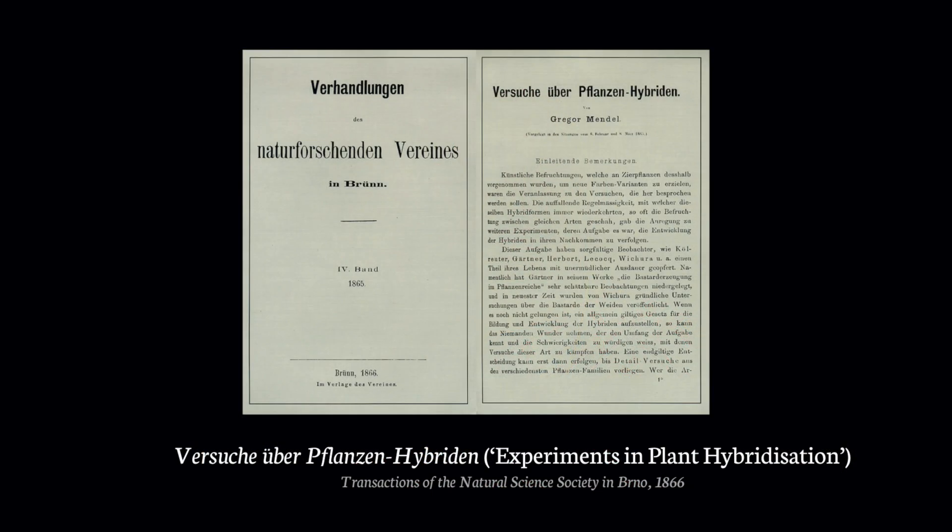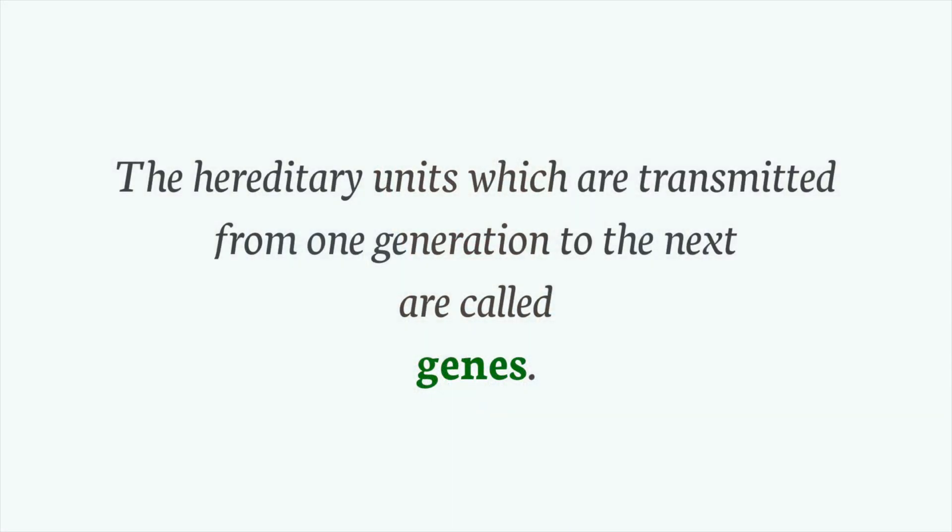Mendel was not the first to perform these experiments, but he was one of the first to consider the results in terms of individual traits. In 1866, Mendel published his research. In his work, he mentioned invisible factors. According to Mendel, each factor determined the expression of a trait. Later, Johansson borrowed the term gene from Darwin's usage — Mendel's pangene — and used it in place of Mendel's factors. This is the word we know and use today. The hereditary units which are transmitted from one generation to the next are called genes.